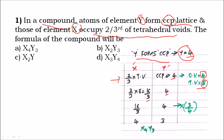To convert to a whole number, multiply by three to remove the denominator, and divide by four since four is common between both terms. So X becomes four and Y becomes three. The formula is X₄Y₃, and the right answer for this question is option A.